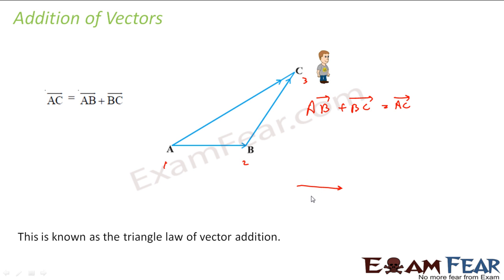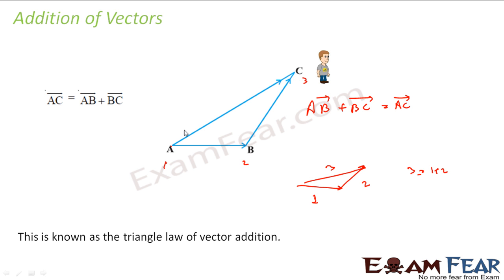You have one vector A and another vector B. You add these two and you get a third vector C. C is equal to A plus B — that is what is called addition of vectors. And why is it used? When a person moves from here to here and then here to here, the actual movement he made was from the first point to the last point, and you get this through vector addition.